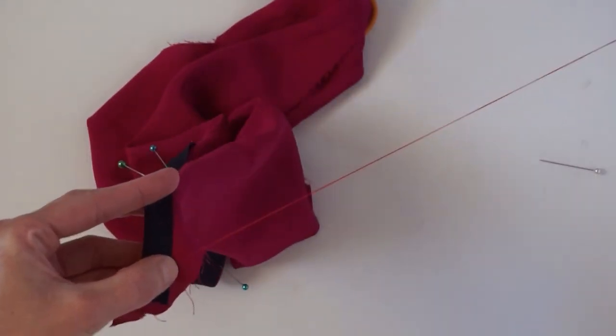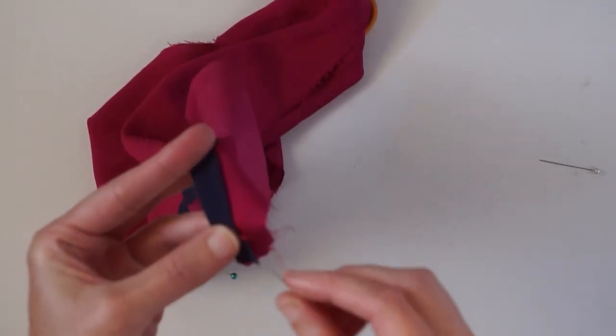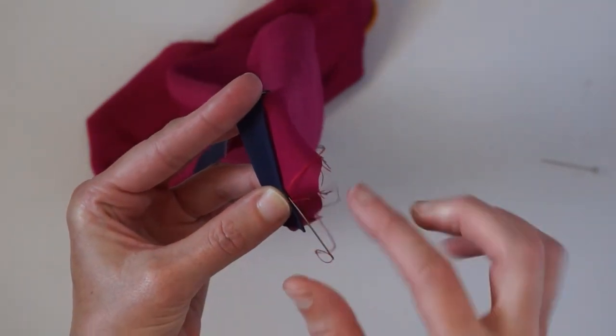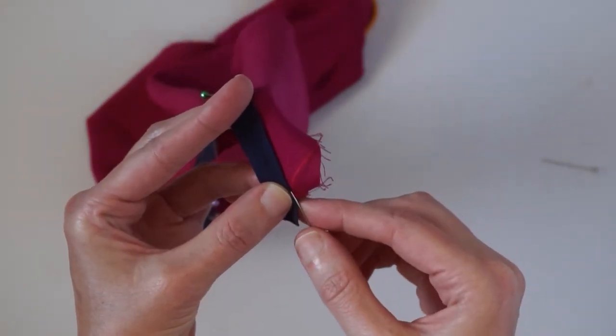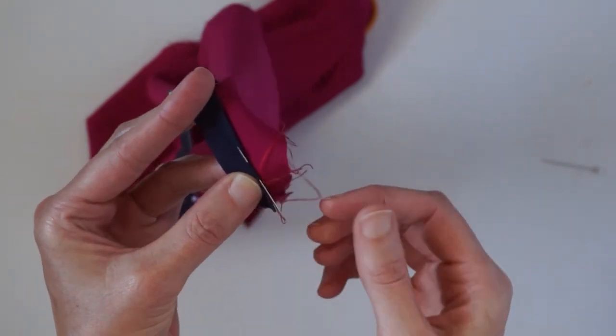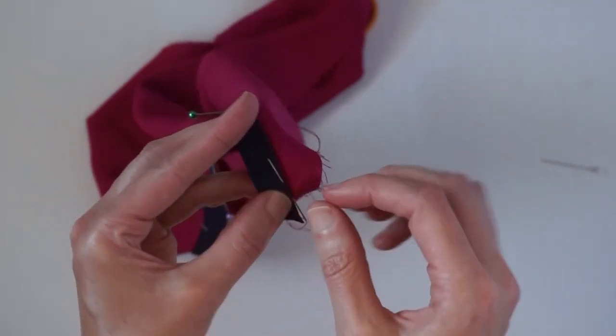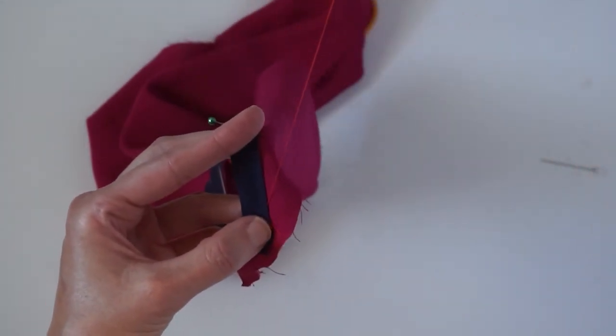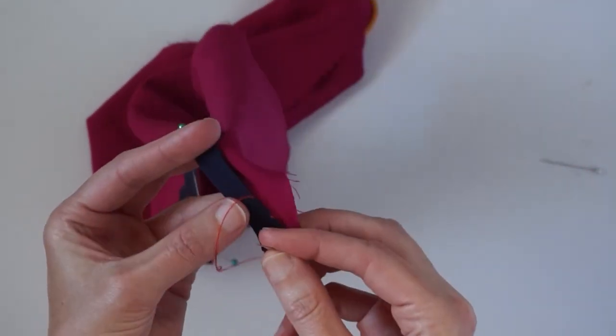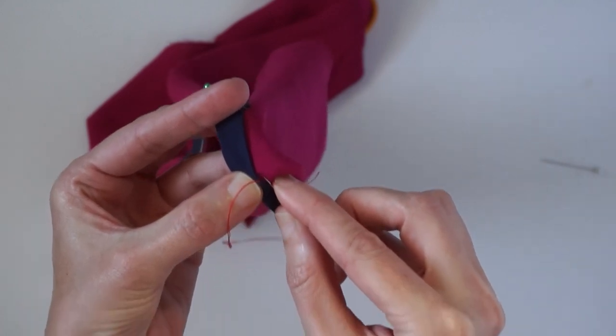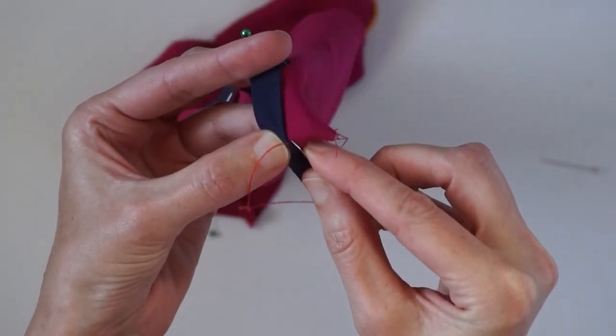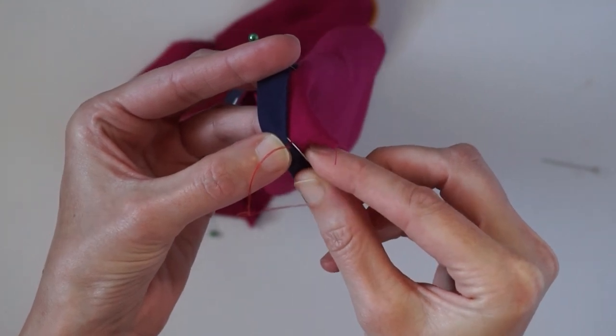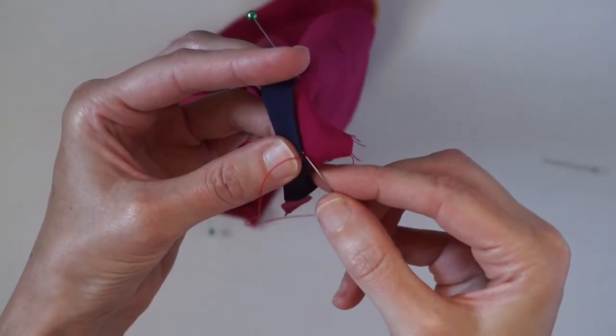Now pick up your needle and we're going to go back into the facing right next to where we did the stitch through the garment, and pick up maybe half an inch and just pull that through. Then again we're going to pick up just like two threads of our garment fabric.